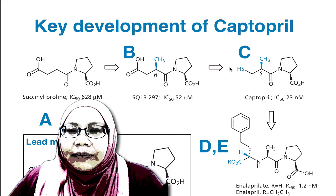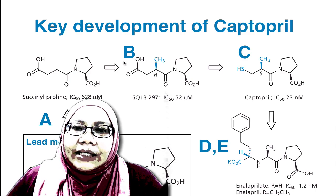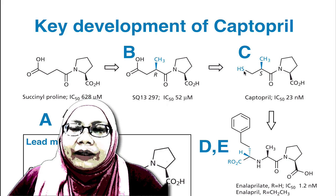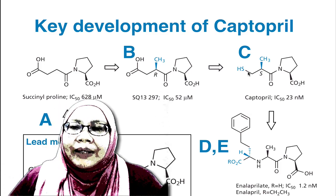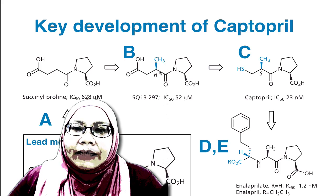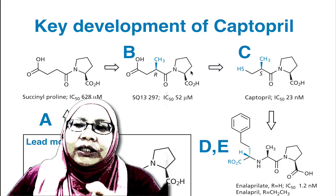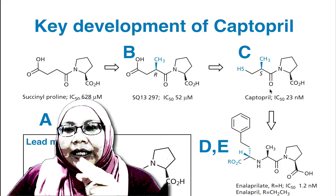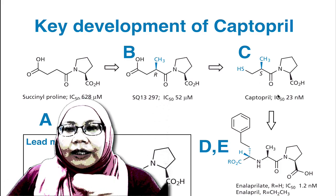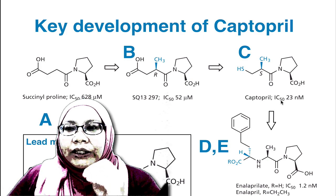The third milestone in the development of captopril is the formation of captopril itself, whereby the carboxylic acid is replaced with a thiol group. They also retain the methyl group, with a change in configuration from R to S. With those two changes, the IC50 dropped further. In fact, the IC50 of captopril is 23 nanomolar — which is more than a two-fold increase in potency compared to SQ13297, since that value was in micromolar.